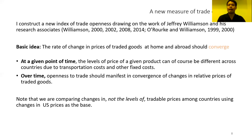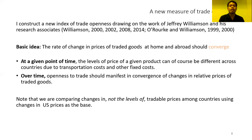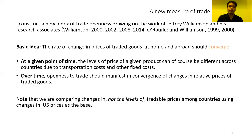What I have done is construct a new index of trade openness drawing on the work of Jeffrey Williamson and his research associates. The basic idea is that the rate of change in prices of tradable goods at home and abroad should converge. At a given point in time, the price level of a given product, especially manufactured products, can differ across countries due to transportation costs and other fixed costs. But over time, trade openness should manifest in the convergence of changes in the relative prices of tradable goods.